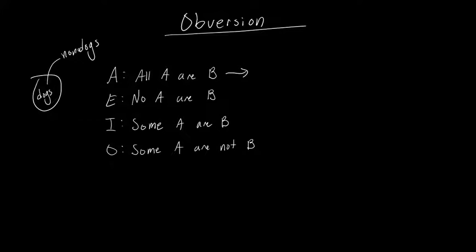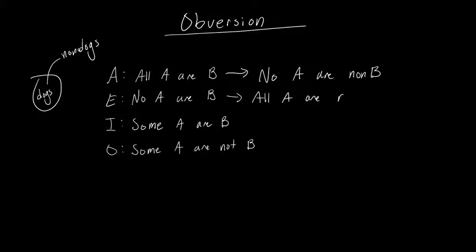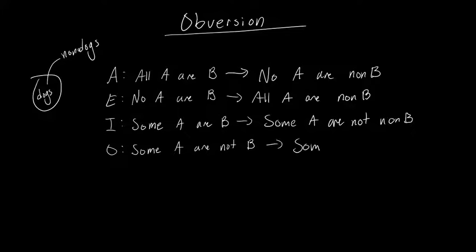Obversion requires that you turn affirmative statements into negative statements, or if they're negative, turn them into affirmative. And you replace the predicate with its complement. So 'all A are B' becomes 'no A are non-B', and 'no A are B' becomes 'all A are non-B'. 'Some A are not B' will become 'some A are non-B'.